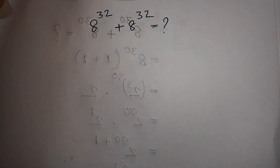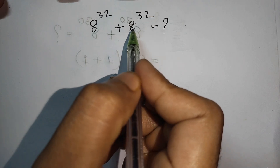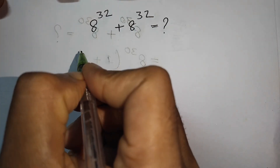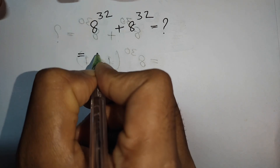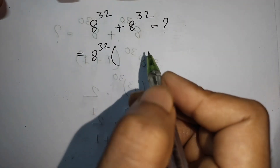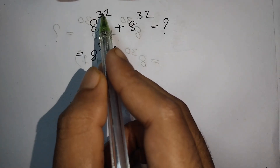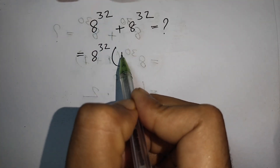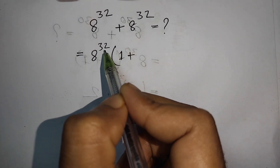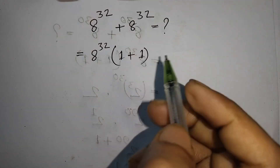How to simplify 8 power 32 plus 8 power 32 is equal to what? At first, we take common 8 power 32. Then 8 power 32 divided by 8 power 32, that means 1. And same as 8 power 32 divided by 8 power 32, that means 1.